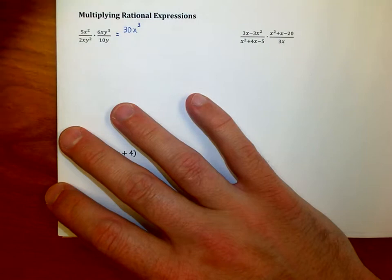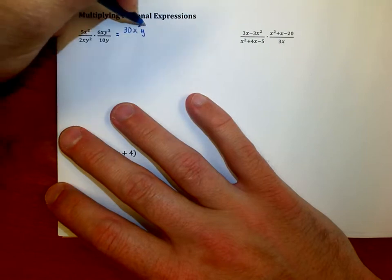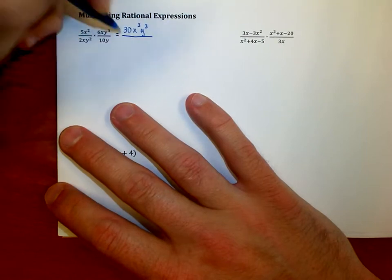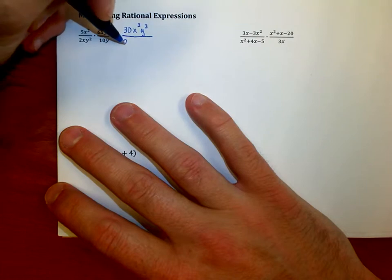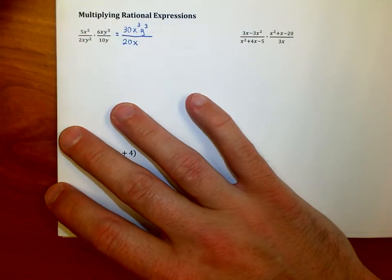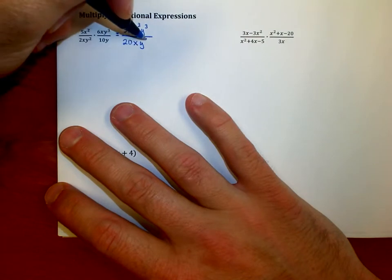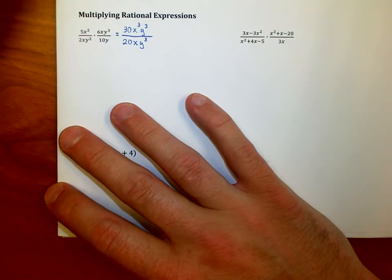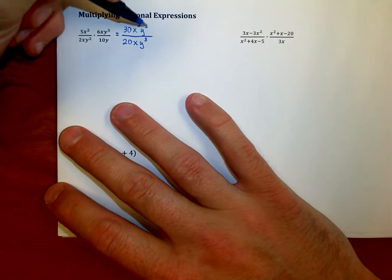I have y cubed, and then on the bottom I have 2 times 10, which is 20, and I have x, and I have y squared times y, which is y cubed. Then I can go through and start reducing stuff down.